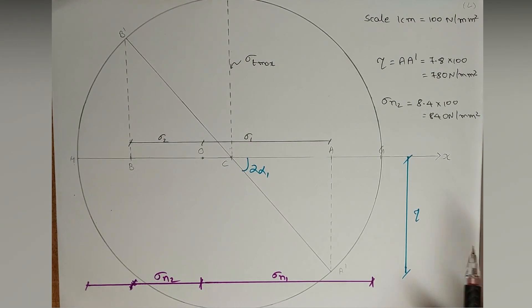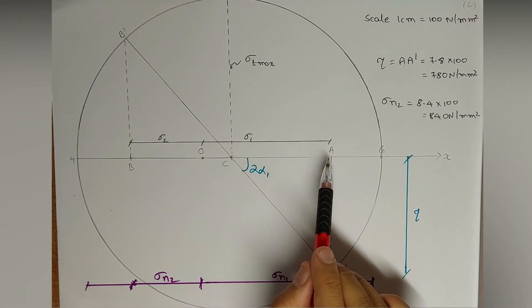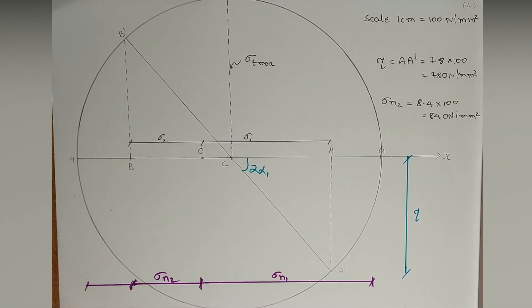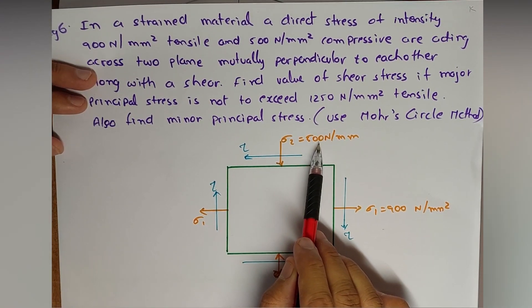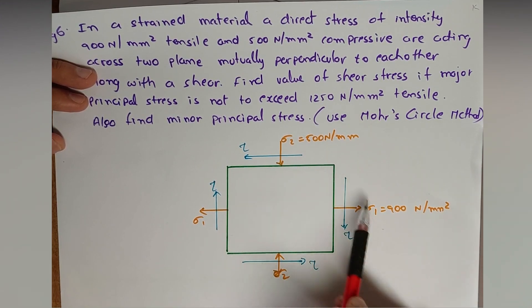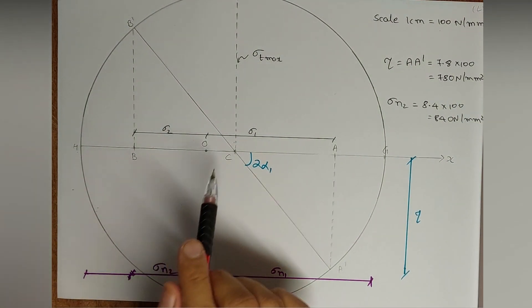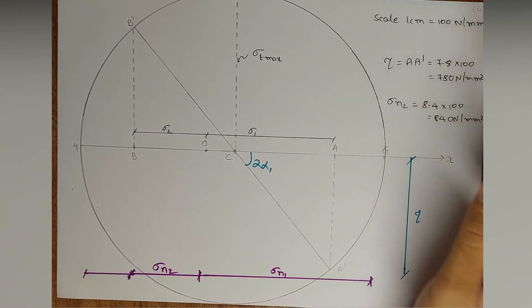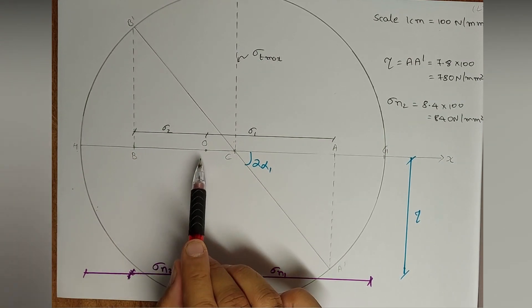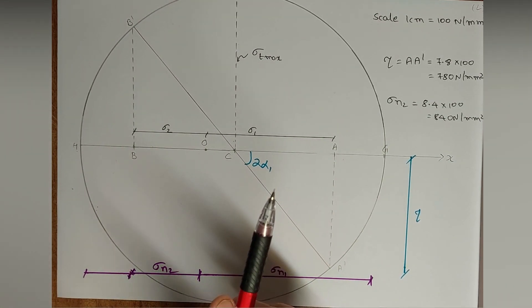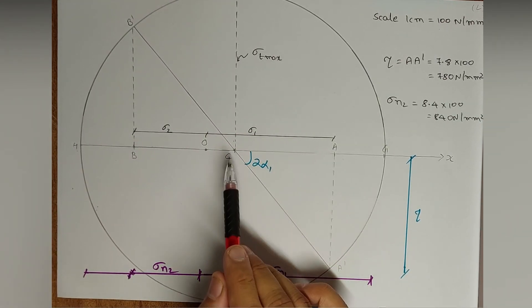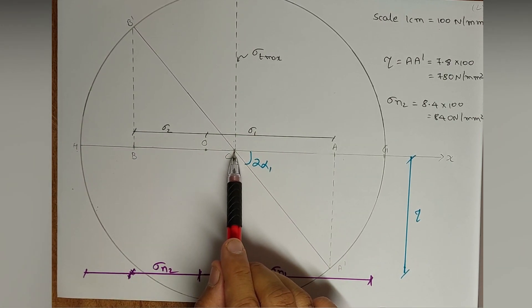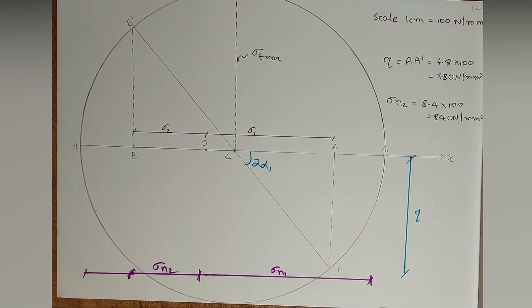Mark my words — the steps are different because of the shear stress. O to A is 9 centimeters. Sigma 2 is 500 N/mm² but it is compressive, so the value is minus 500. We draw O to B in the opposite direction, 5 centimeters. Now we have OA and OB, and as per our regular steps, we bisect AB to find the center C of line AB.